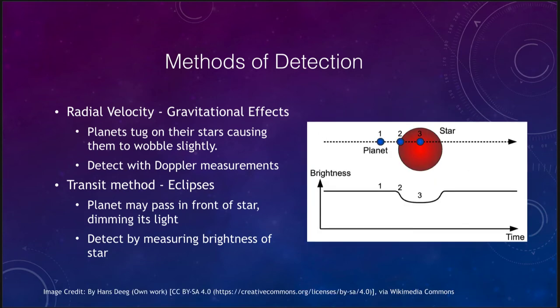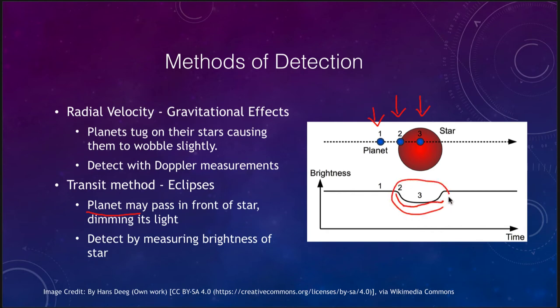The other method we use is the transit method. That works in cases where the planet passes in front of the star, causing its light to dim. At position one, the planet is separate from the star. At position two, it is just starting to block out part of the star's light. At position three, it is blocking out the star's light, making it a little bit fainter. The dimming can be only a fraction of a percent depending on the size of the star, the brightness of the star, and the size of the planet.